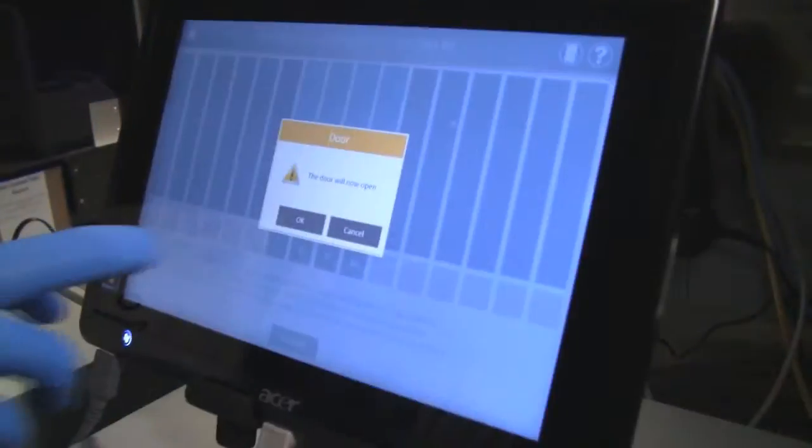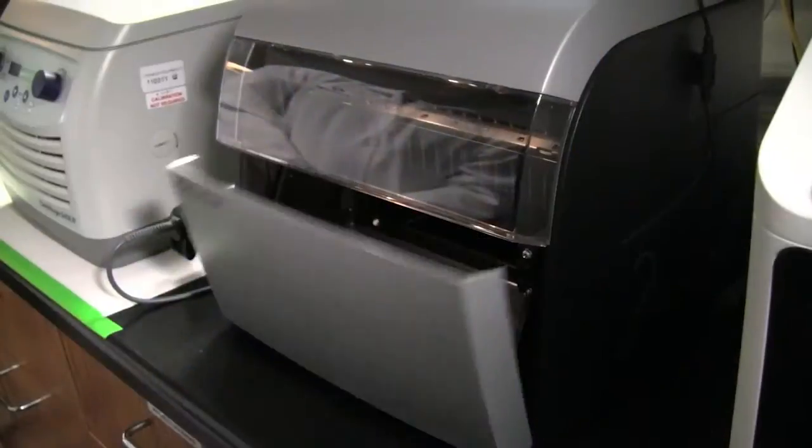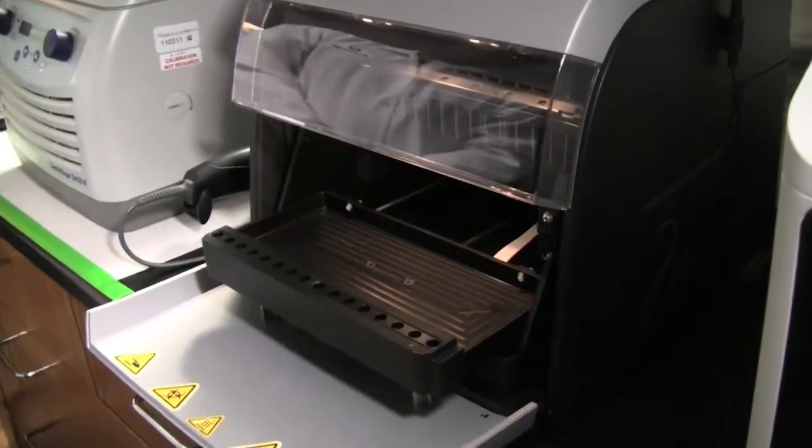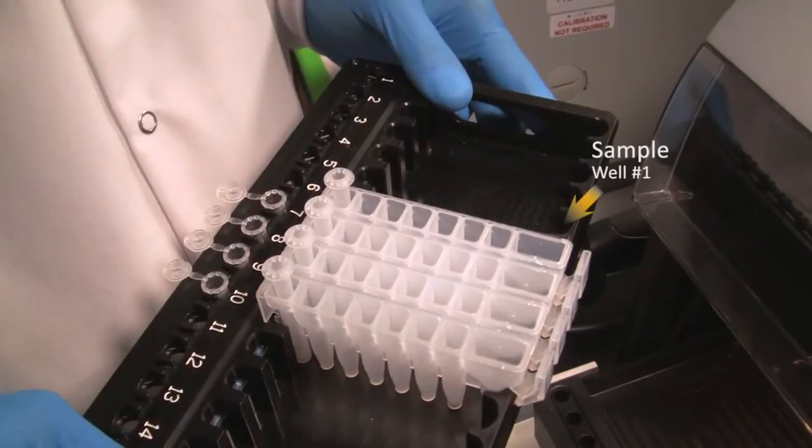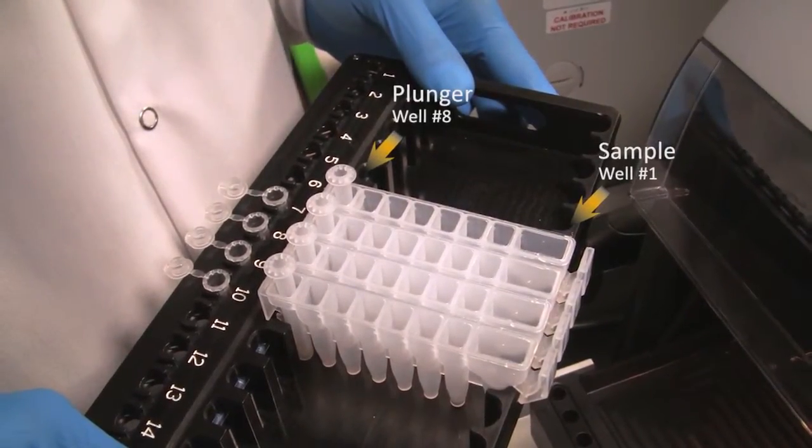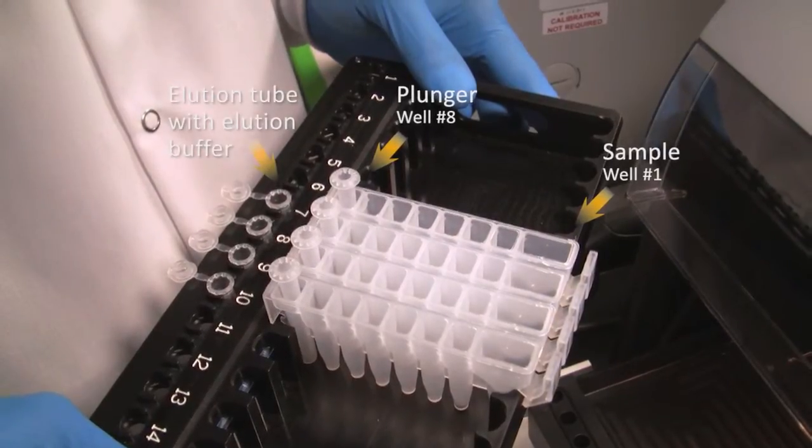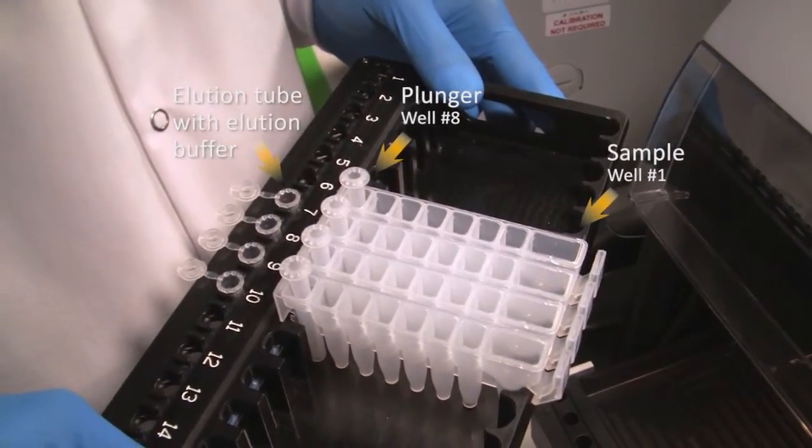The door will automatically open. Check the cartridges to make sure that sample has been added to well number one, a plunger has been placed in well number eight, and an elution tube with elution buffer is in place.